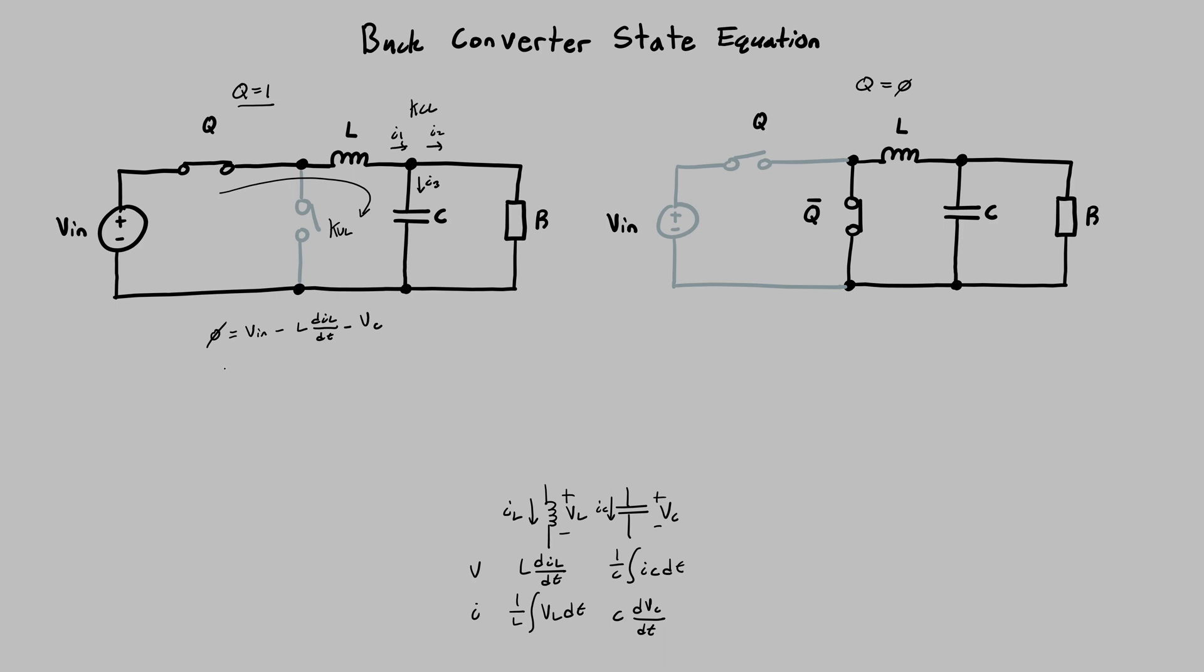Just rearranging this, you can get IL dot is 1 over L, VN minus VC. So that's the first state equation.